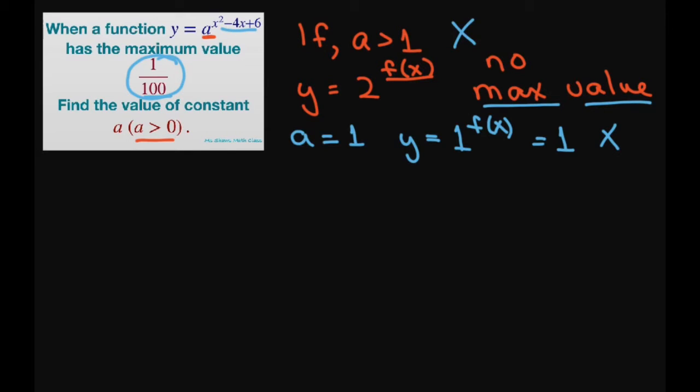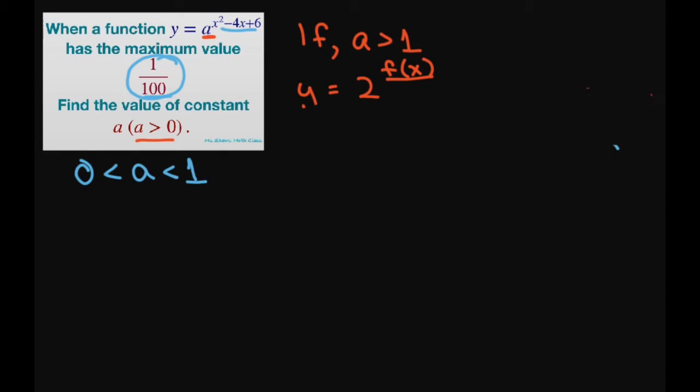So the only time this is going to work is if we have a is greater than 0 but less than 1. And what that means is we're going to have a fraction for a. So 1 divided by 2 to some f of x. Now that can have a maximum value that will be in a fraction form.